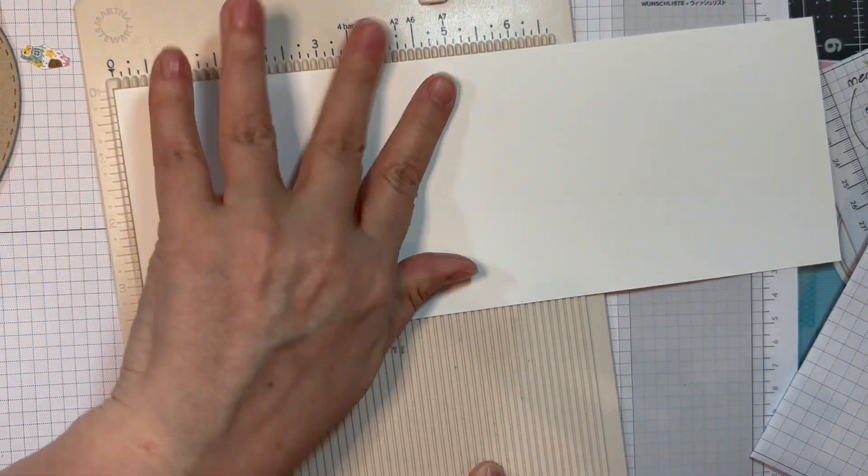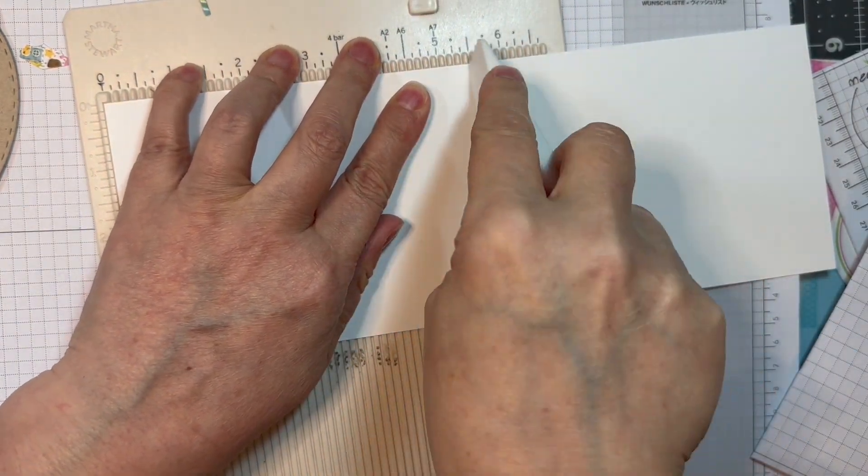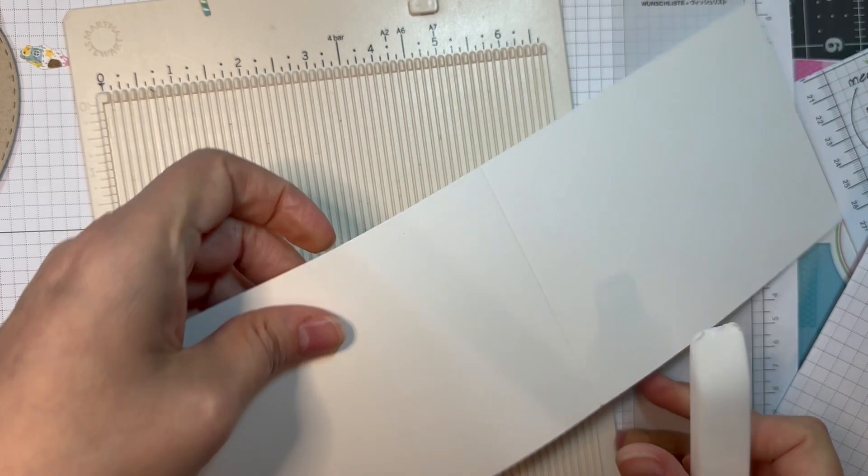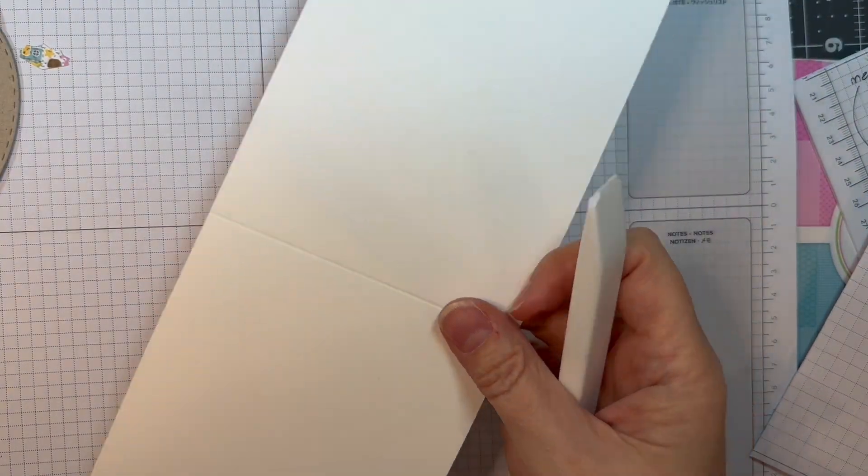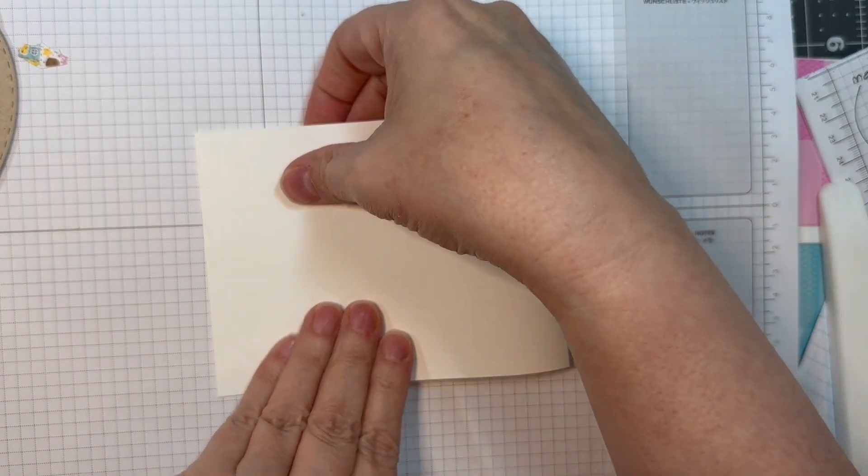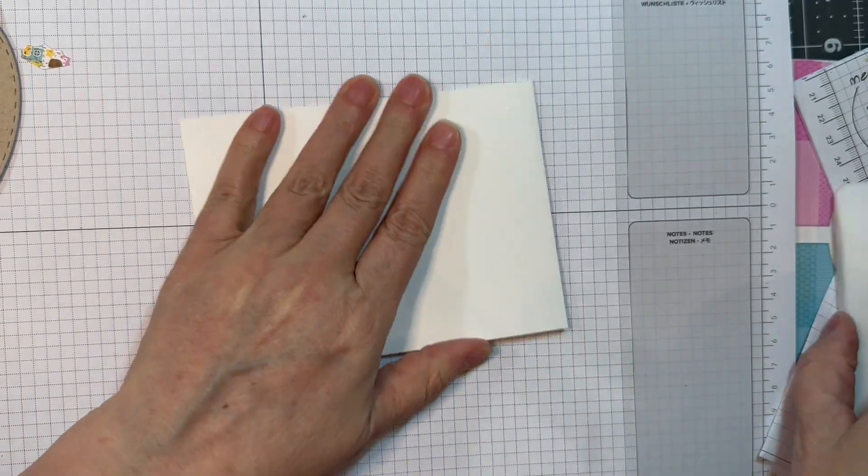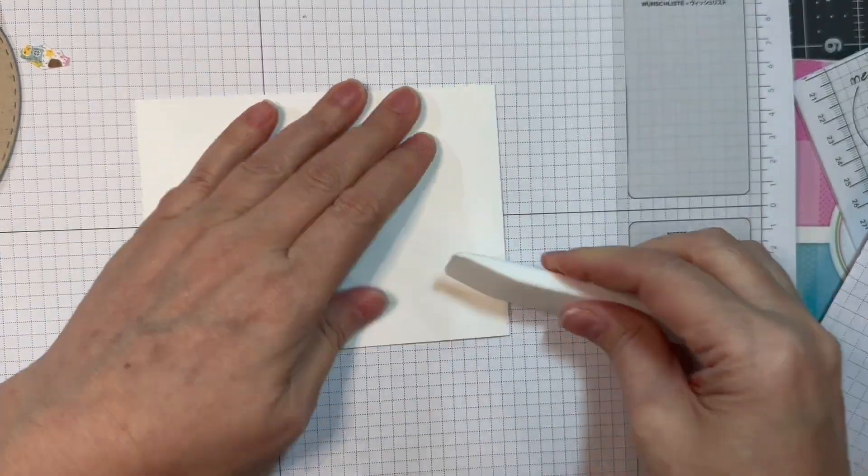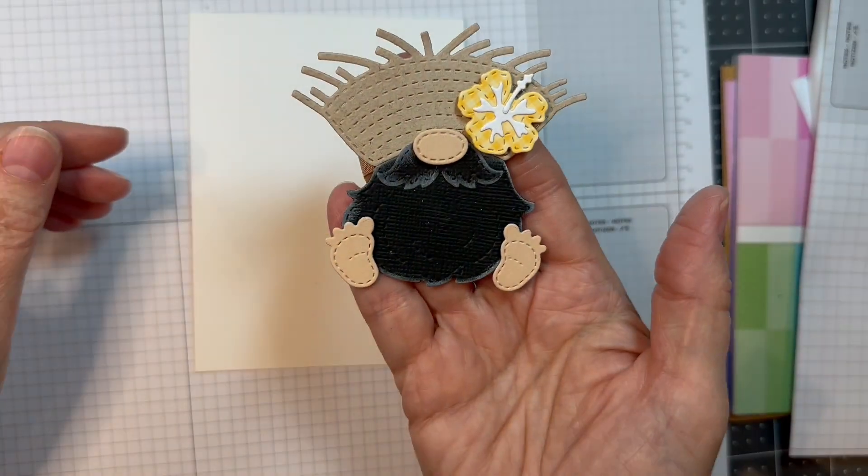I've got a piece of Simon Says Stamp Heavyweight White Card Stock cut at 4.25 by 11, scored at 5.5 inches to make a vertical A2 size card. I'm using my Teflon bone folder to score that and reinforce the fold. I'm working on a Stampin' Up Pad as per usual.